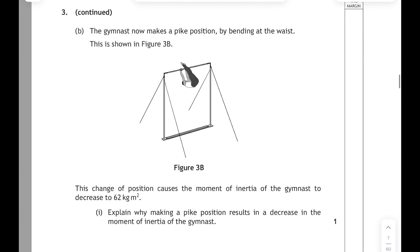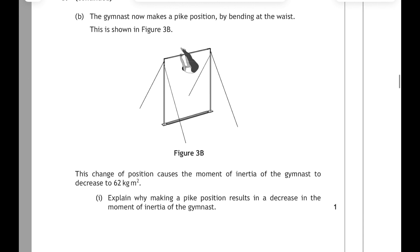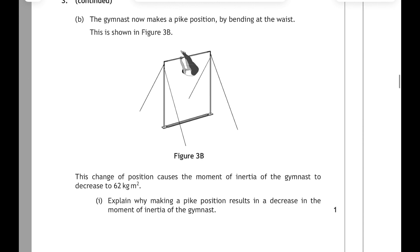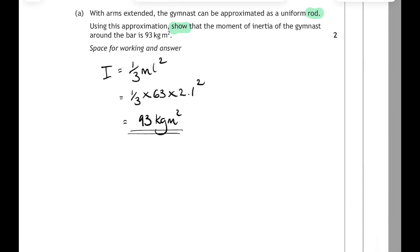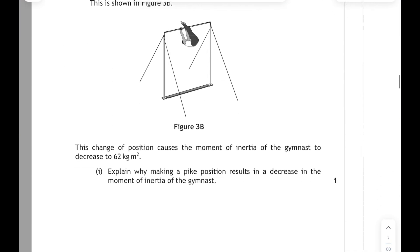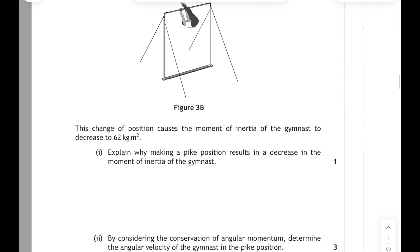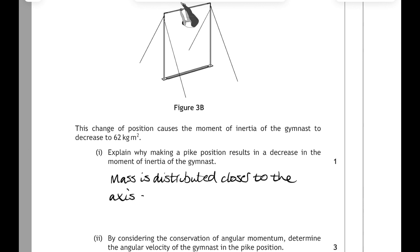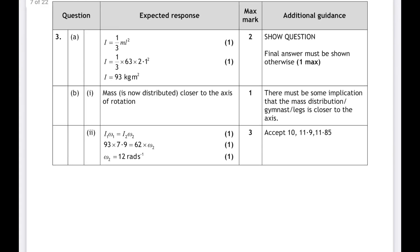3 part B: the gymnast now makes a pike position by bending at the waist. This causes the moment of inertia to decrease from 93 kg·m² to 62 kg·m². We have to explain why making a pike position results in a decrease in moment of inertia. Their mass isn't going to change, but their mass will be distributed closer to the axis of rotation. Looking at the marking instructions, the only acceptable answer is that the mass is now closer to the axis of rotation — don't be tempted to write that the gymnast will have a shorter length.